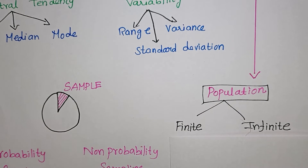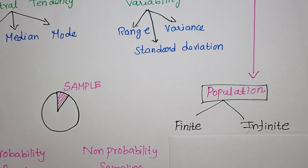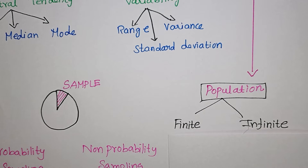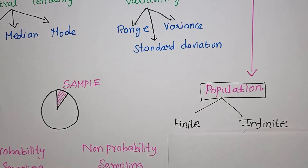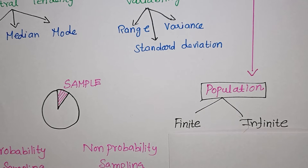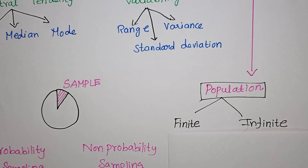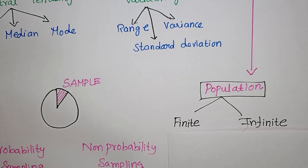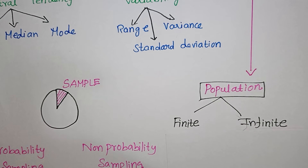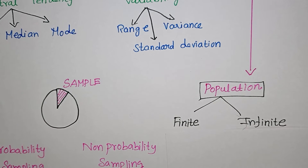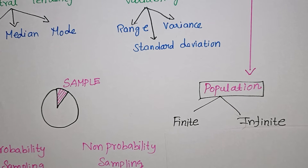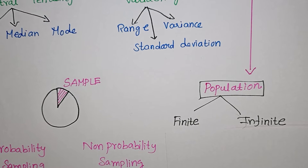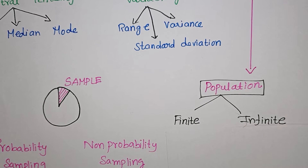A population can also be a group of objects. It includes any data from experiments, observations, or procedures. Population is a broad concept in statistics — it refers to all members of a defined group you want to understand.